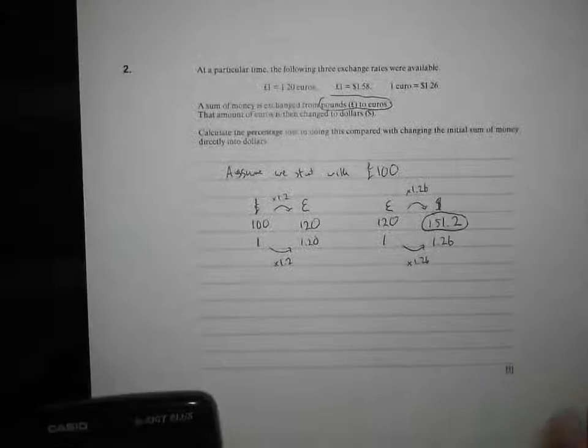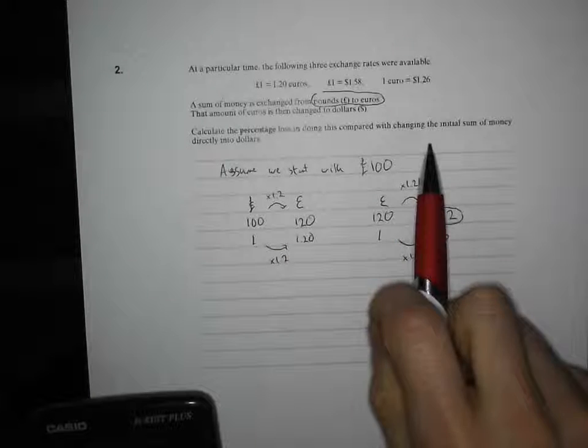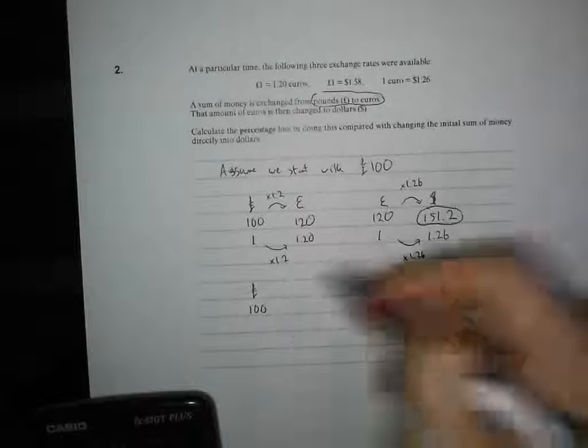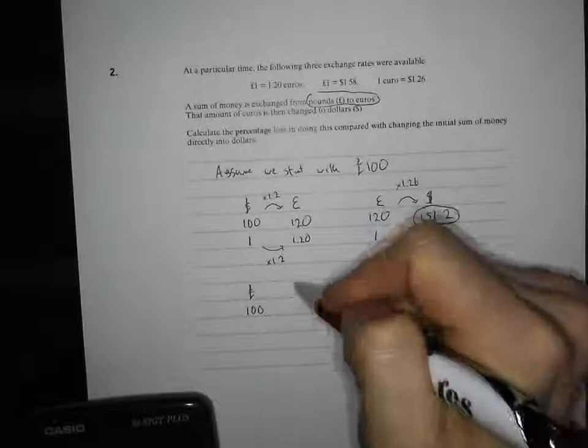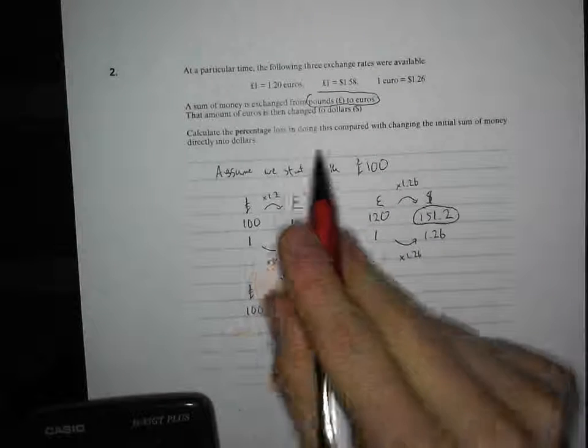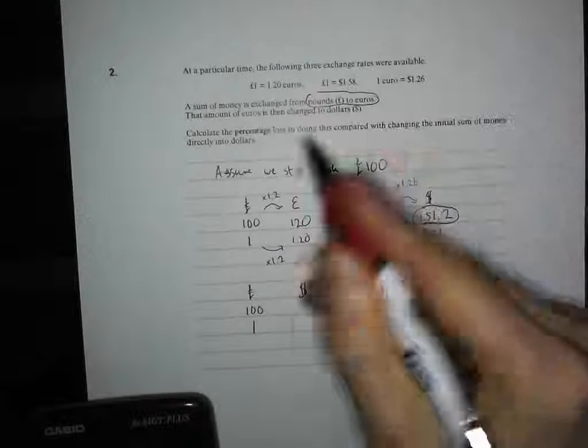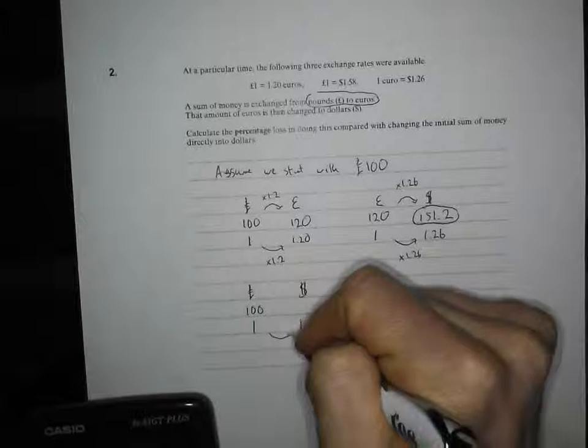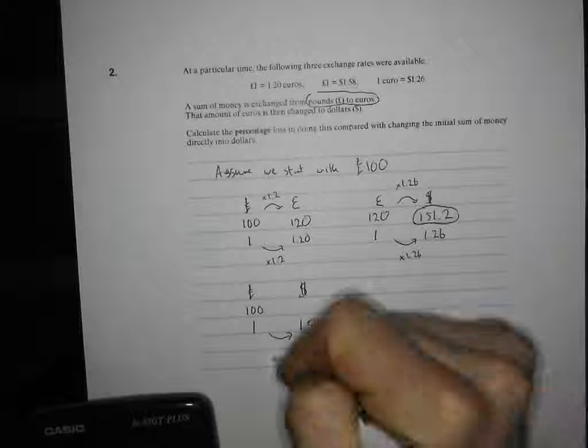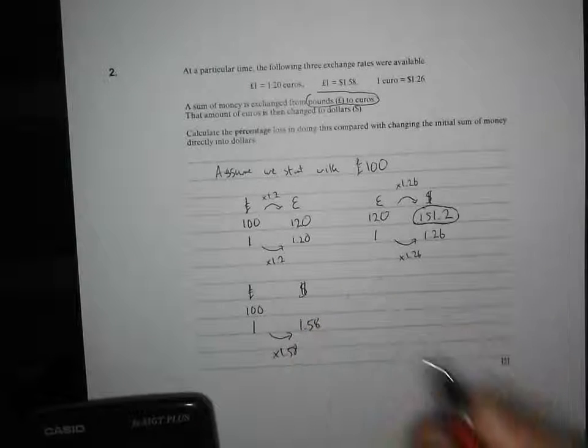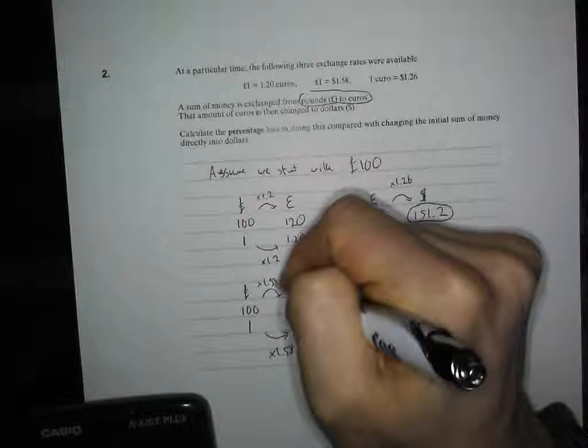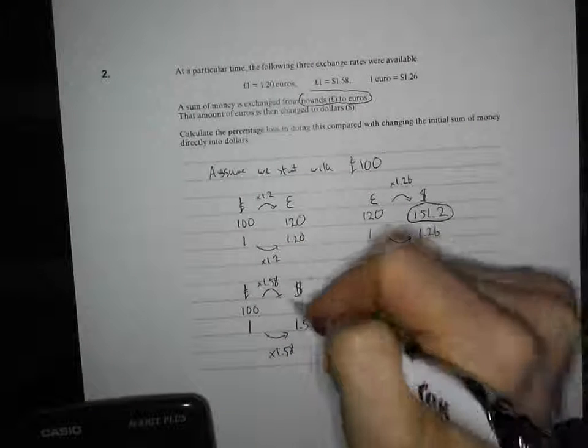Now, let's compare it the other way. If this time, we just take our initial sum of money, so we've got 100 pounds, and this time, we're going to change it directly into dollars. So, we know that one pound is $1.58. So, to get from our pound to our dollars, we times by 1.58. So, let's do the same thing there, times by 1.58. Well, that'll be no surprise. I don't need a calculator for that. That's going to be $158.